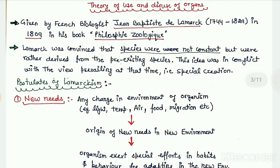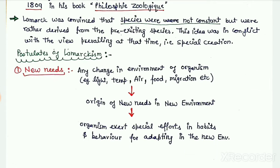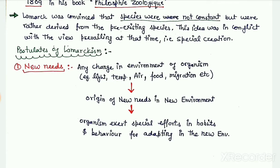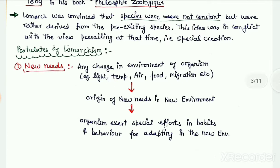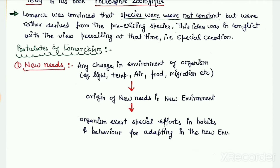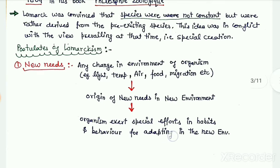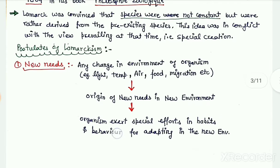Let us now look at the important postulates of Lamarckism, which explain the mechanism of evolution of new species from pre-existing ones. The first postulate is 'new needs.' Lamarck believed that any change in the environment of an organism — whether in terms of temperature, scarcity or abundance of food, or light conditions — leads to the origin of new needs for that organism. To adapt to this new environment, organisms exert special efforts in their habits and behavior.